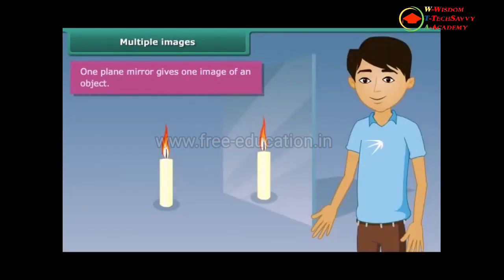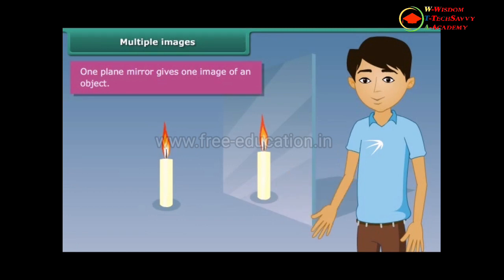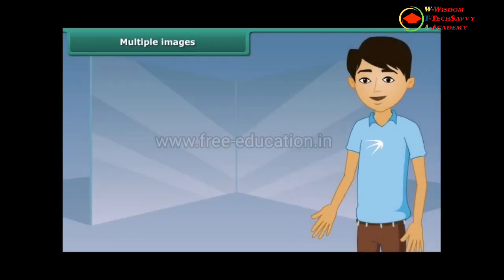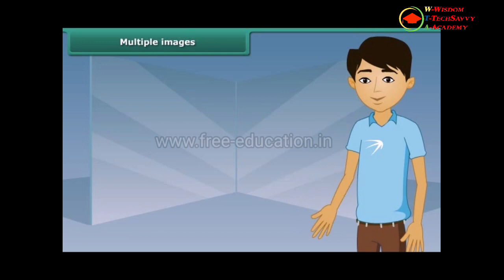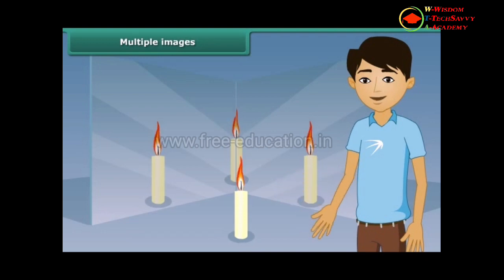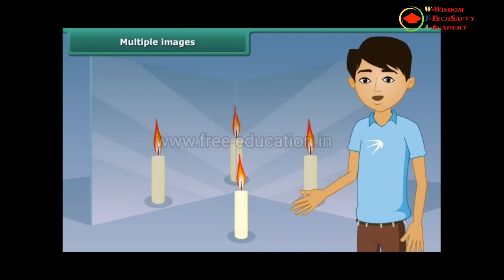One plane mirror gives one image of an object. Can you tell how many images we would obtain with two plane mirrors? Let us perform an activity to find out. Take two plane mirrors and set them at right angles to each other with their edges touching. Place a lighted candle in between the mirrors. Strangely, we can see three images of the candle. This is how multiple images are formed in a mirror maze.